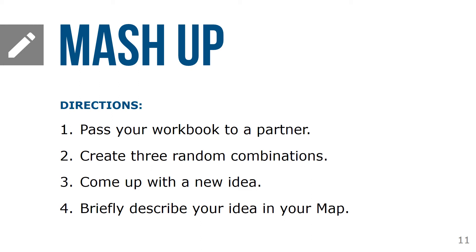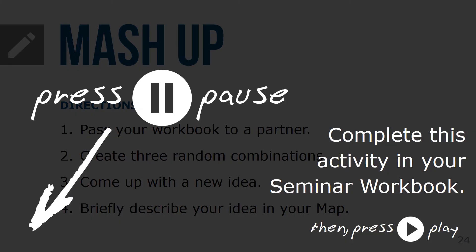For each combination, come up with a new idea inspired by the mashup. Briefly describe your idea and how it relates to the problem. If you're stuck, think back to the inspiration you gathered — what unmet need did you observe? Try to come up with ideas that address that. In a few short words, jot your thoughts down on your design thinking map on page 18 when you're complete. Press pause now to complete this activity in your workbook. When you're finished, press play to continue with the seminar.